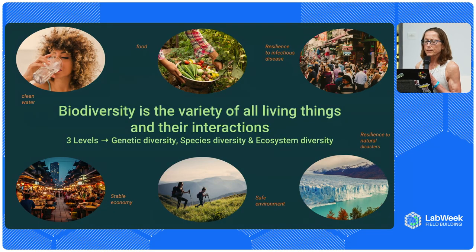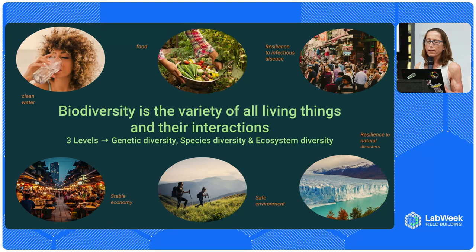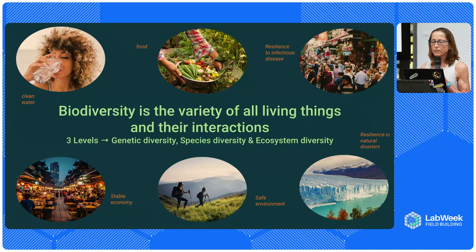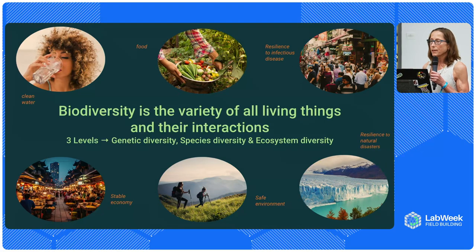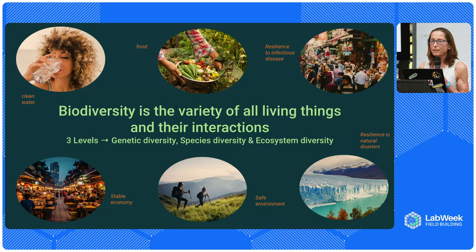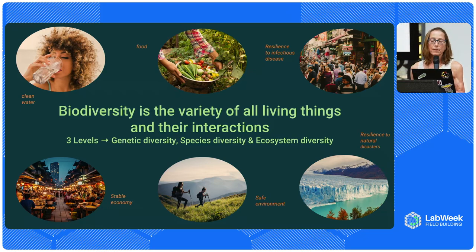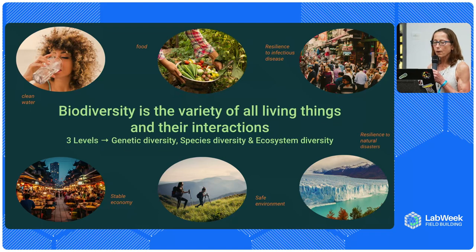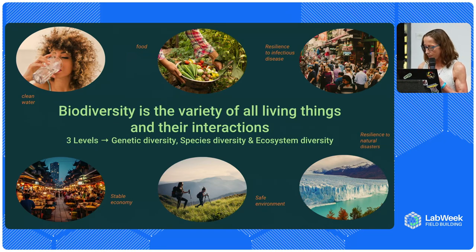To provide a sense of what this means, let's define biodiversity. Biodiversity is the variety of all living things and their interactions, and it's typically measured at three levels: genetic diversity, species diversity, and ecosystem diversity. Why should we care about losing biodiversity? In short, our lives, our health, our well-being, and our livelihoods are all dependent on the lives of other species and their ecosystems. A loss of biodiversity affects a broad range of human needs, including our food, clean water, a safe environment, resilience to infectious disease and natural disasters, and a stable economy.